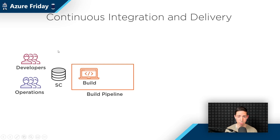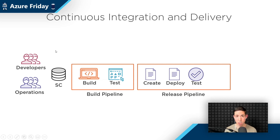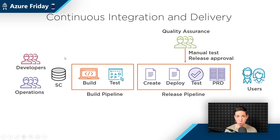The build pipeline takes the code from source control, builds it — compiling the code — maybe also runs some unit tests. If that all goes well, it takes the resulting package, which could be an application but also infrastructure artifacts like ARM templates, and gives that to the release pipeline. The release pipeline then creates or updates infrastructure with those ARM templates, deploys your application to the new and updated infrastructure, runs tests, maybe functional tests as well. Test people can do a manual test and potentially sign off on the release approval. Then from there it gets released to production and users can start using your new version.